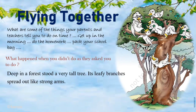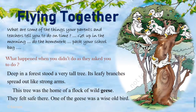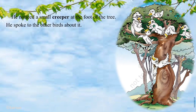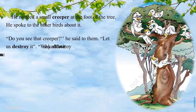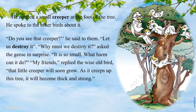Deep in a forest stood a very tall tree. Its leafy branches spread out like strong arms. This tree was the home of a flock of wild geese. They felt safe there. One of the geese was a wise old bird. He noticed a small creeper at the foot of the tree. He spoke to the other birds about it. 'Do you see that creeper?' he said to them. 'Let us destroy it.' 'Why must we destroy it?' asked the geese in surprise. 'It is so small. What harm can it do?'